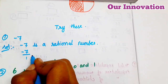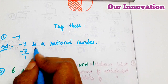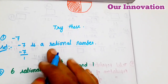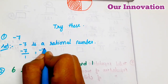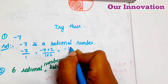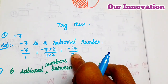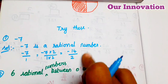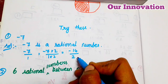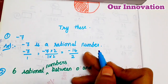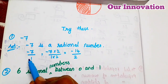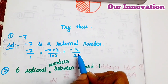So this is the equivalent rational number. This is the equivalent number — equivalent rational number. The integer is above and below, so rational number is the integer. Therefore, minus 7 is a rational number, and −14/2 is also a rational number.